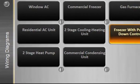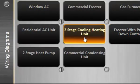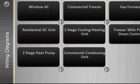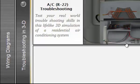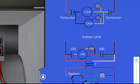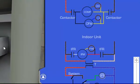The wiring diagram section contains eight modules, ranging from a simple window AC to a complex commercial condensing unit. The 3D troubleshooting section contains two modules: a split residential AC system and a boiler.